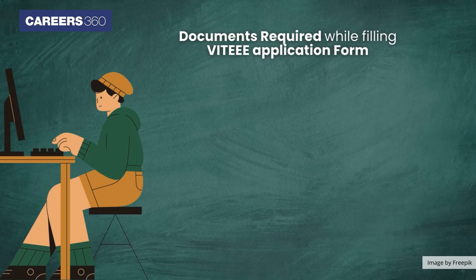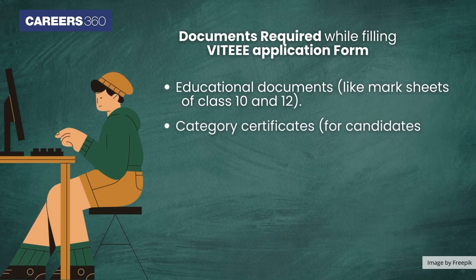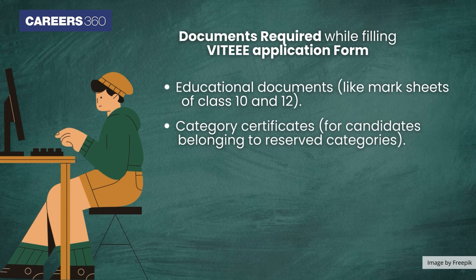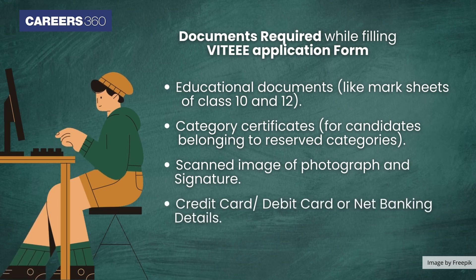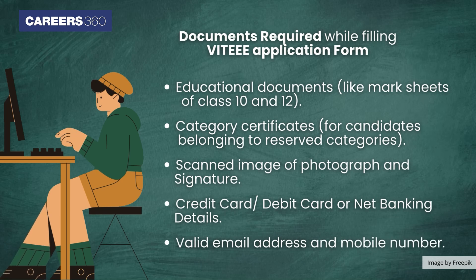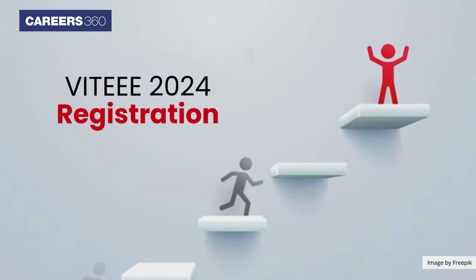The documents required while filling the VITEEE application form are as follows: educational documents like mark sheets of class 10th and 12th, category certificates for candidates belonging to reserved categories, scanned image of photograph and signature, credit card, debit card or net banking details, and a valid email address and mobile number.